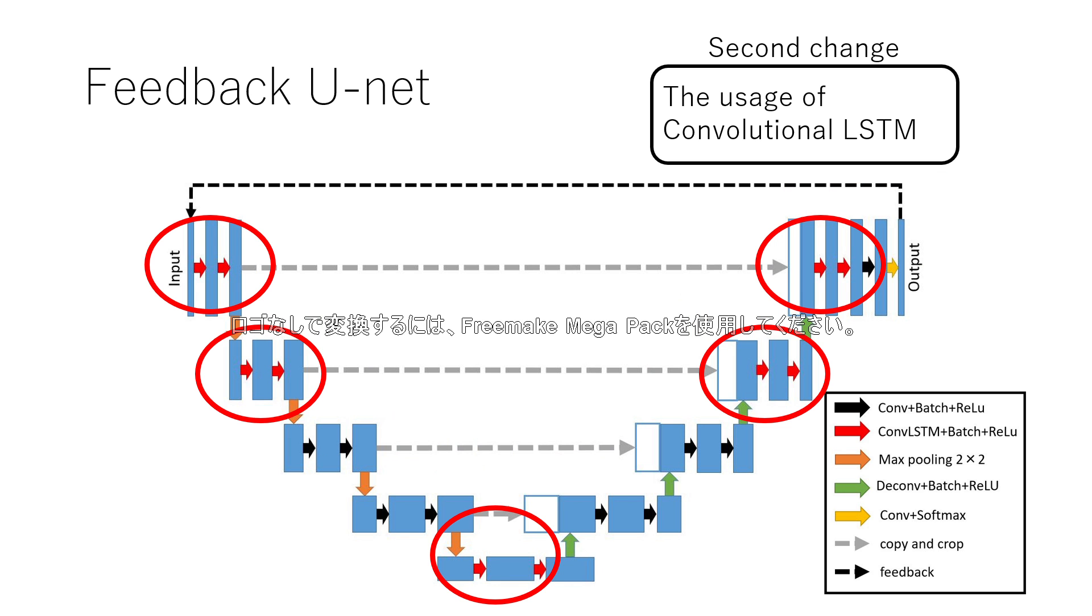The second change is the usage of convolutional LSTM. Convolutional LSTM layer is recurrent neural network and it deals with sequential data. When feed-back is performed in normal convolutional layer, only weights are shared because normal convolutional layer does not deal with sequential data. Thus, the features extracted at the first run is unrelated to the features extracted at the second run.